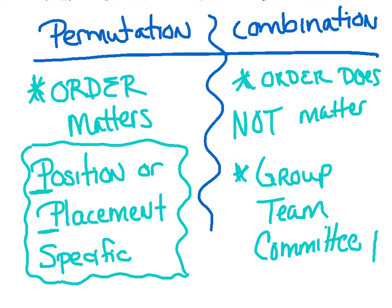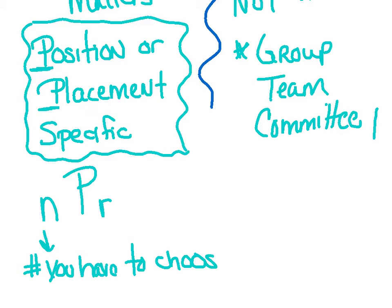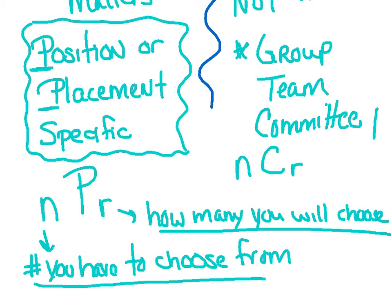Now the formula that we're going to use to represent these for permutation is going to be little n, like a subscript, PR. And n stands for the number you have to choose from. So this r represents how many you're going to pick or choose. How many you will choose. The only difference you're going to use p for permutation and c for combination.